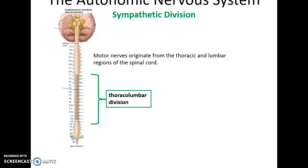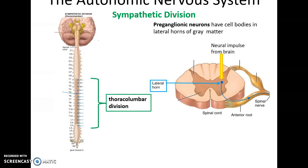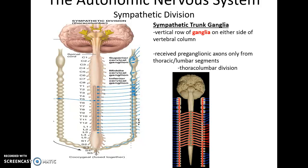The sympathetic division is also known as the thoracolumbar division because its nerves originate from the thoracic and lumbar regions of the spinal cord. A signal comes from the brain down to the relevant spinal cord level, synapses in the lateral horn with the preganglionic neuron, then sends a command out through the anterior root. This nerve fiber enters the sympathetic trunk ganglia - a vertical row of ganglia lying beside the vertebral column on both the right and left sides - which receive all preganglionic axons from the thoracolumbar division.